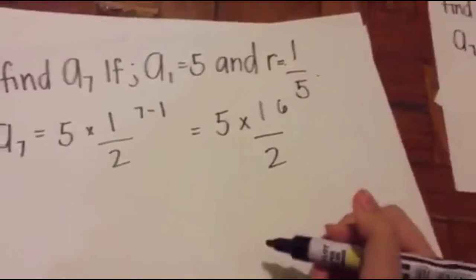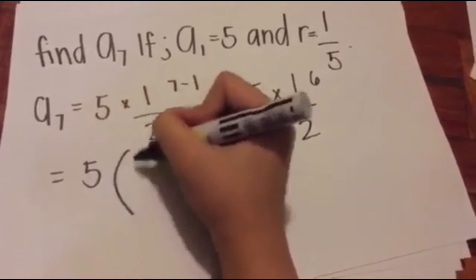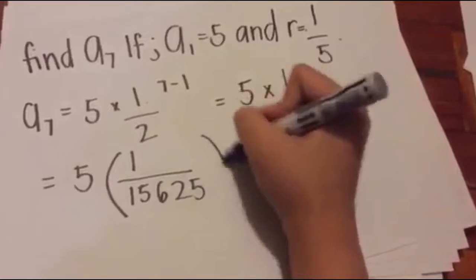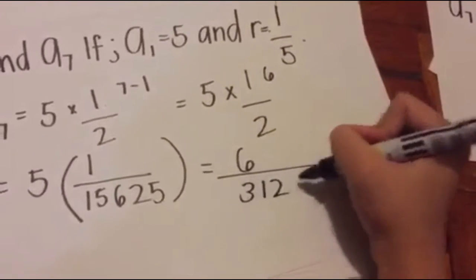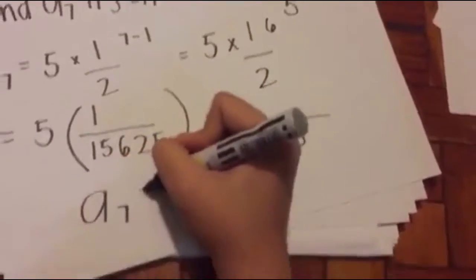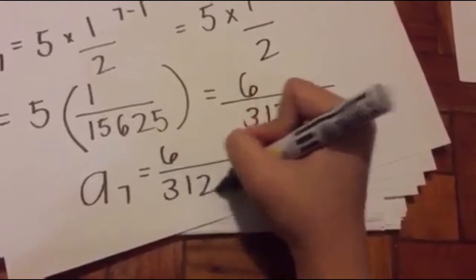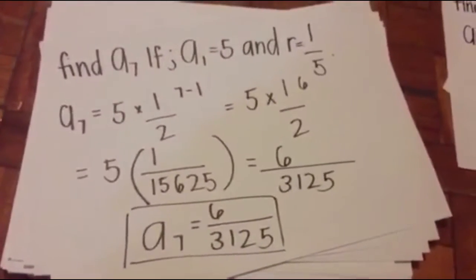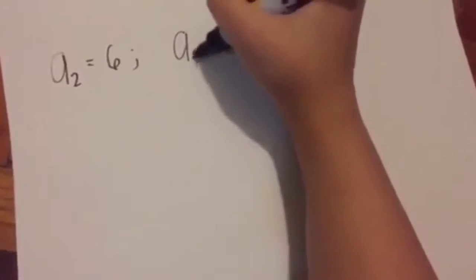Seven minus one is 6. So 5 times 1 over 2 raised to 6. Multiplying that, 5 times 1 over 15,625, you get 1 over 3,125. That is simplified, so that's how you got your a7.